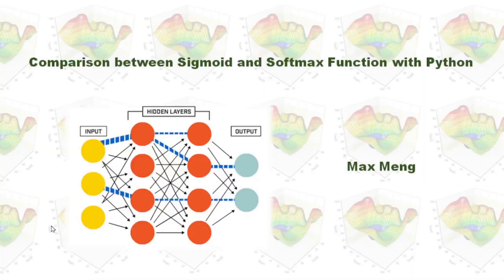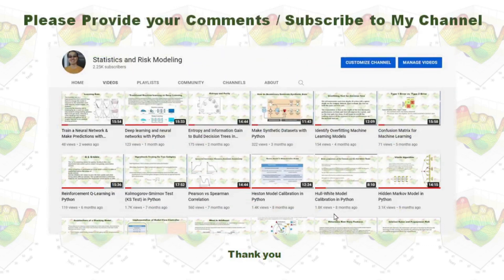This is my comparison between sigmoid and the softmax activation function with Python. Please provide your comments and subscribe to my YouTube channel. Thank you.